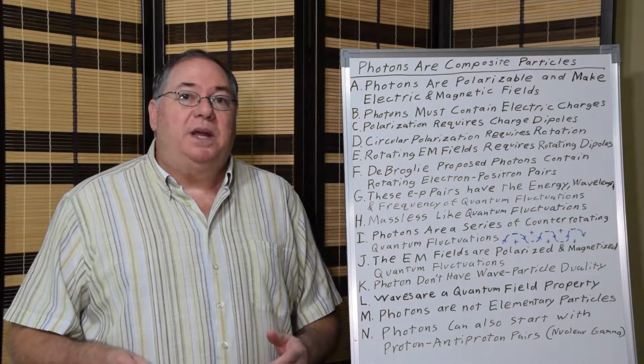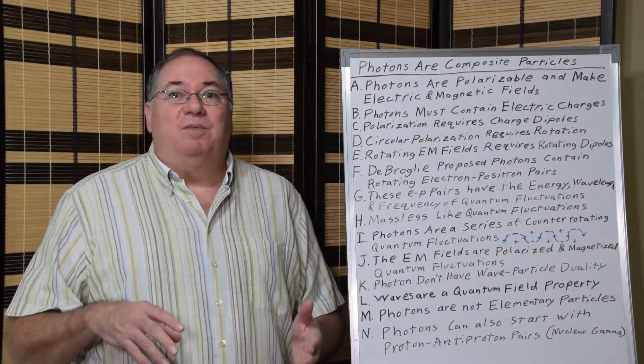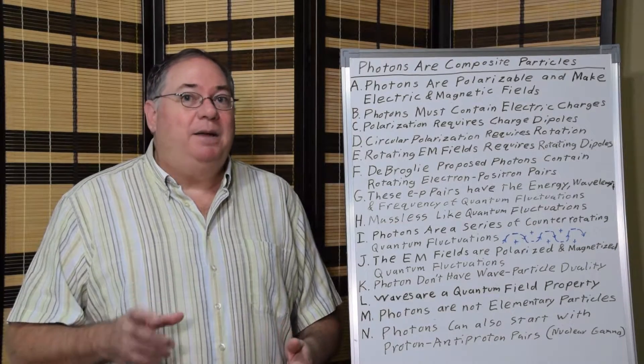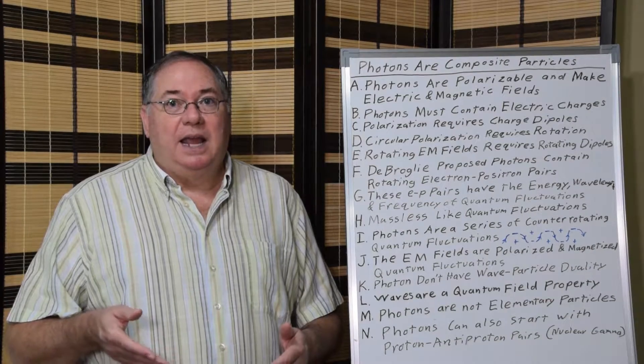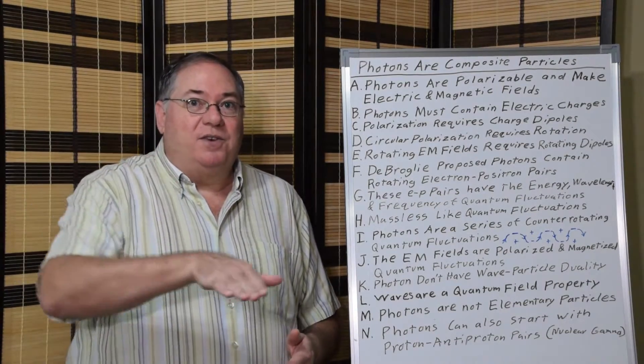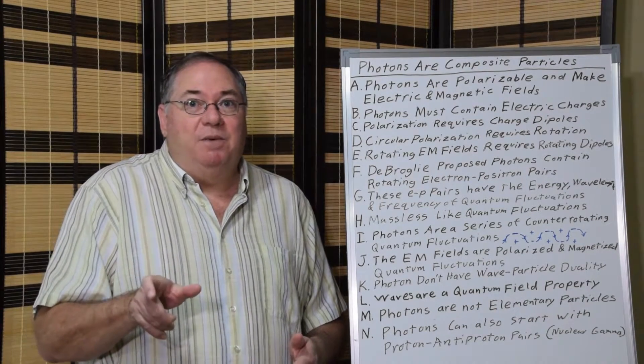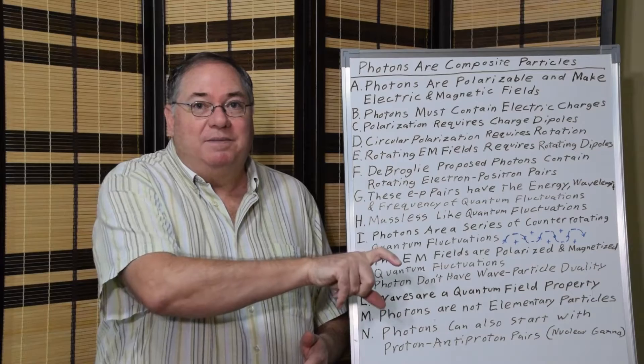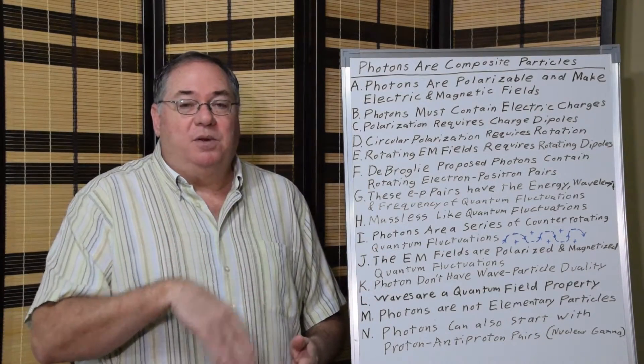And then when we consider the electric field, we have once again a rotating dipole at a minimum in order to polarize in a way that you get a wave function. So you have to have a dipole first rotating one way, then rotating the other way, and then rotating the other way again in order to give you that polarization.